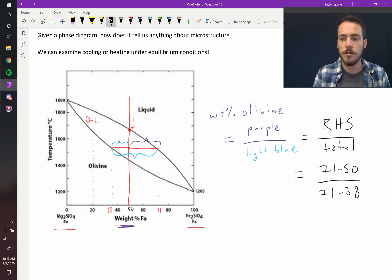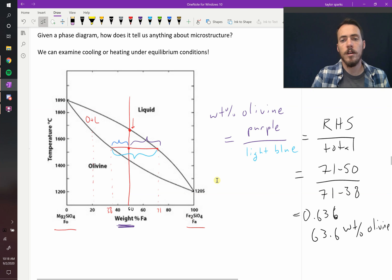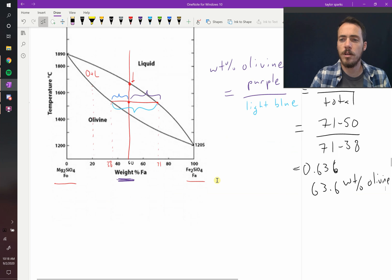Let's punch that into our calculator. So, 21 divided by 71 minus 38 is 0.636, so the weight fraction is equal to 0.636, or 63.6 weight percent olivine. So how much liquid is there? Well, since it's 100 percent total, you know that 100 percent minus 63.6 would be the amount of liquid, but we could also calculate it.